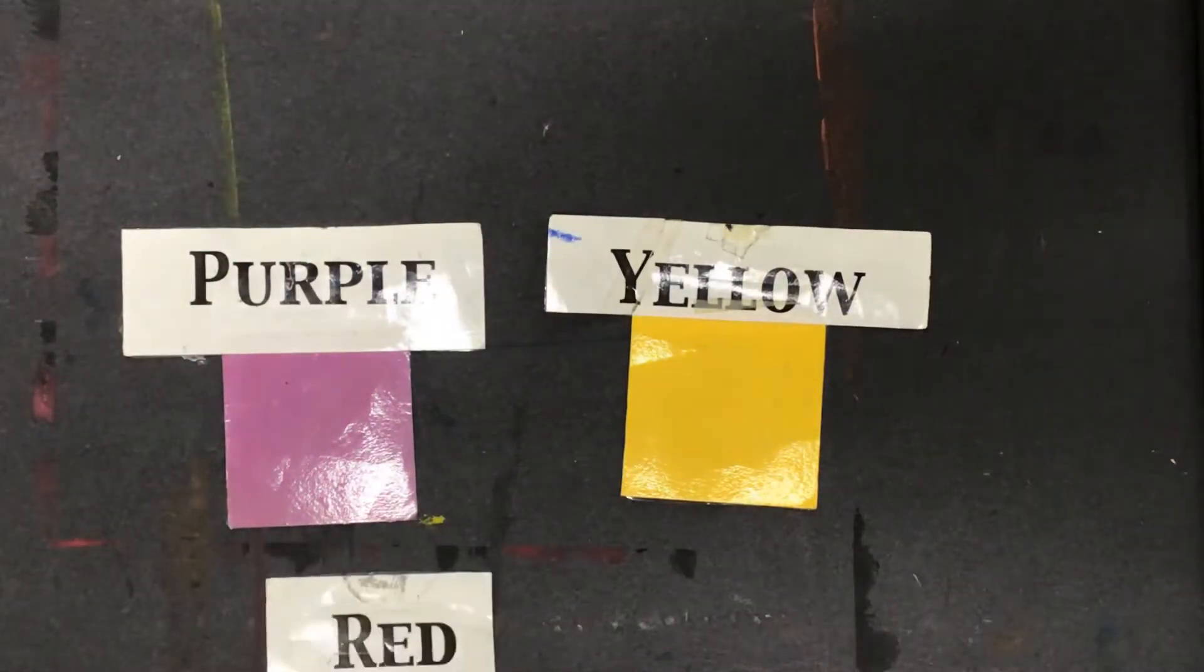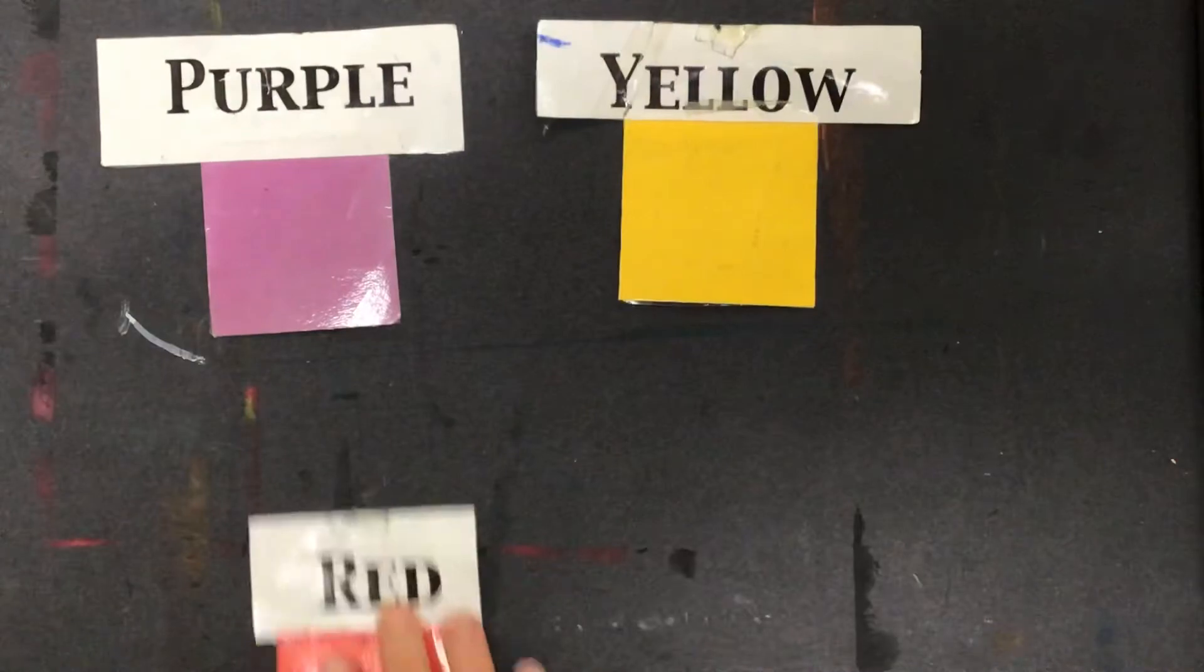So purple and yellow are complements to each other. Red and green are complements to each other.